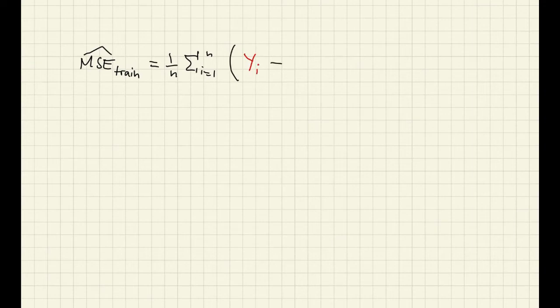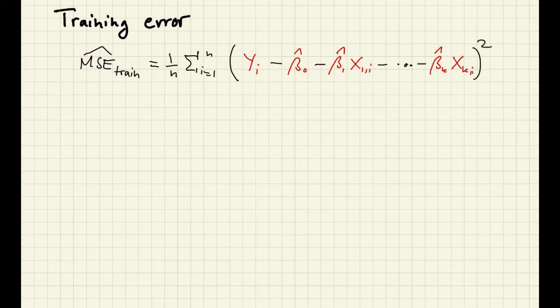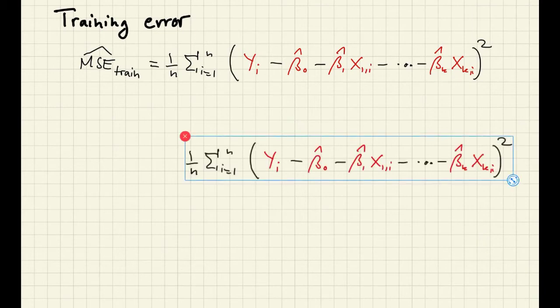Instead of an expectation, we have a sample mean, and now we're just comparing the observed y in the training sample to the OLS predicted values. And to remind you of what these are, let me just expand this. You have seen this expression before. This is the least squares criterion function.